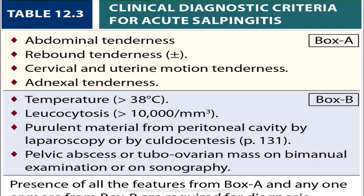The clinical features of oophoritis: the patient will have abdominal tenderness, rebound tenderness, cervical and uterine motion tenderness, and adnexal tenderness. Temperature will be more than 38 degrees Celsius. Leukocytosis count will also be increased to more than 10,000 per mm³. Purulent material from the peritoneal cavity can be observed by laparoscopy or by culdocentesis. A pelvic abscess or tubo-ovarian mass can be appreciated on bimanual examination or sonography.